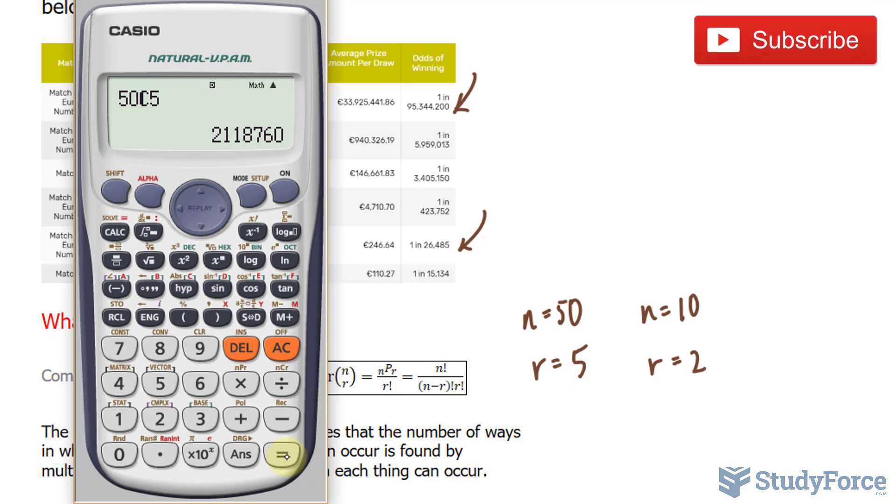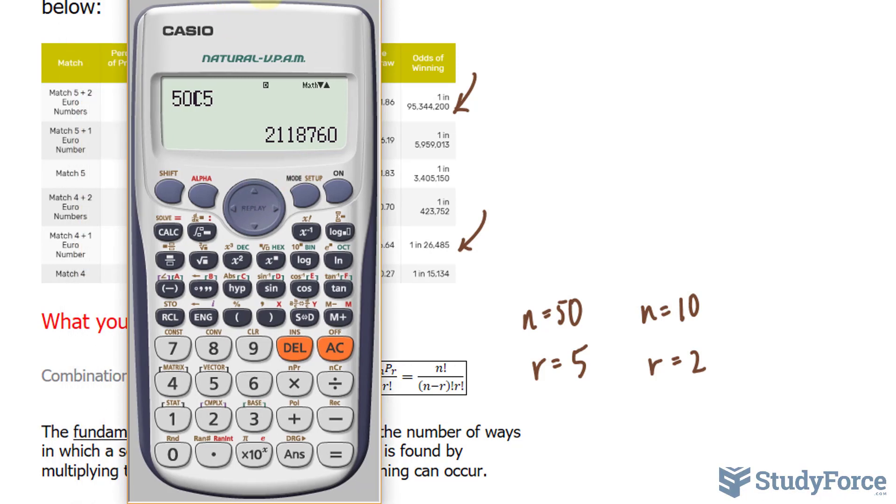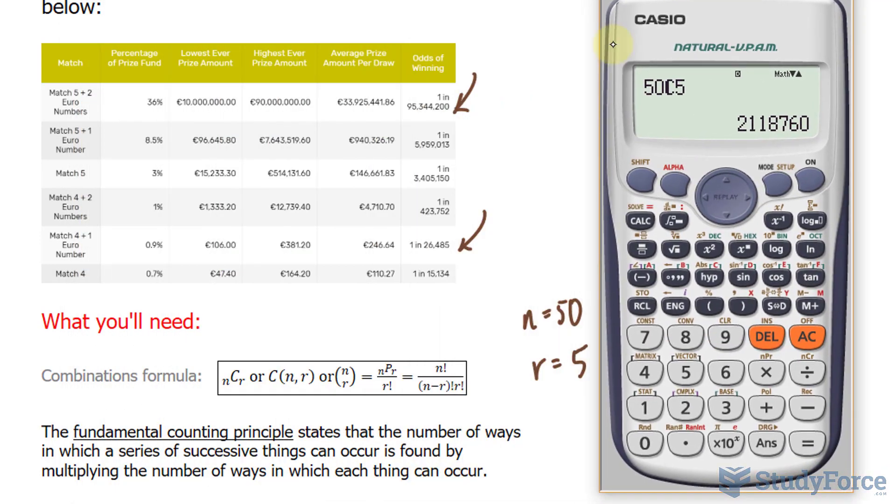And we can do the same thing for this, where we have 10 choose 2, and there are 45 ways to pick 2 from 10. Now, how do we combine these two probabilities, the one that we found earlier and 45? Well, for that we use the fundamental counting principle, which states that the number of ways in which a series of successive things can occur is found by multiplying the number of ways in which each thing can occur.